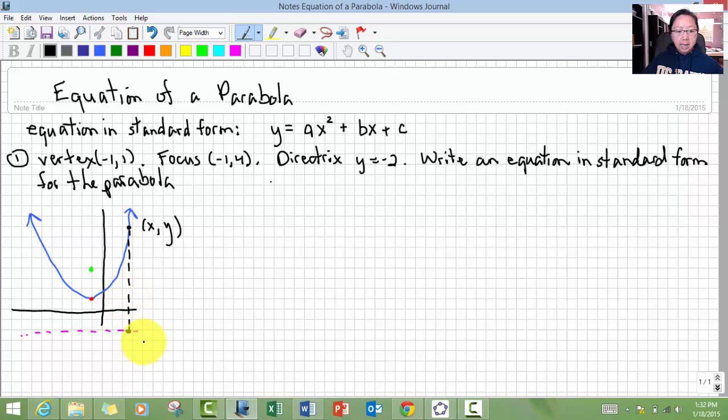That point has some unknown x-coordinate, but I know it's the same as that x-coordinate, but I know the y-coordinate is negative 2. The directrix is on the y equals negative 2 line. So I know the y-coordinate there. And so I connect the line to the focus. And the focus has the point negative 1, 4.